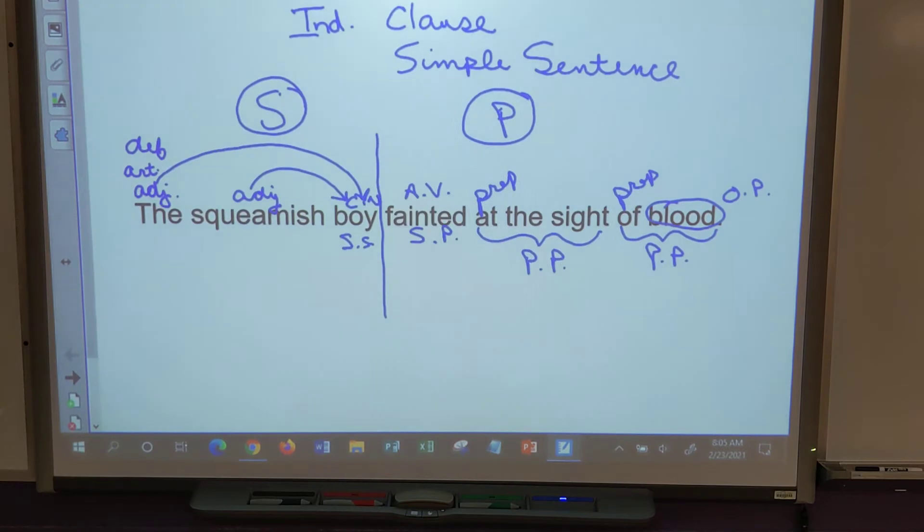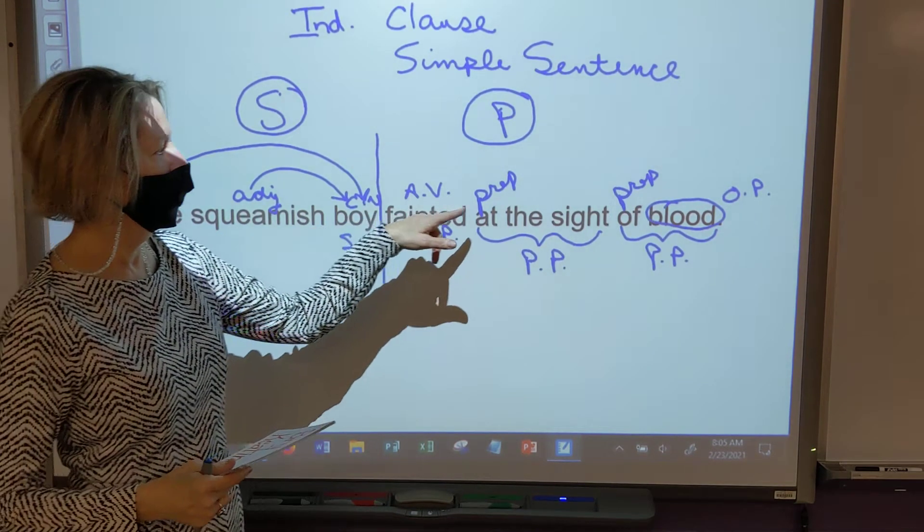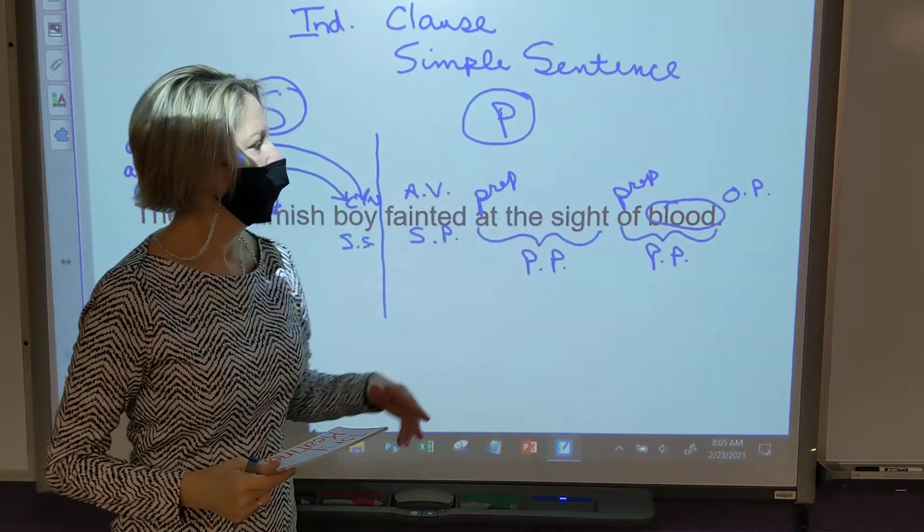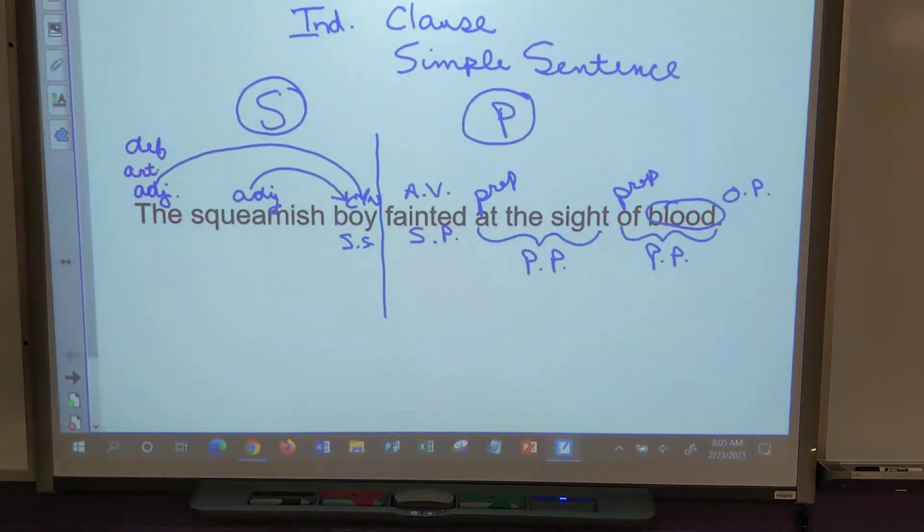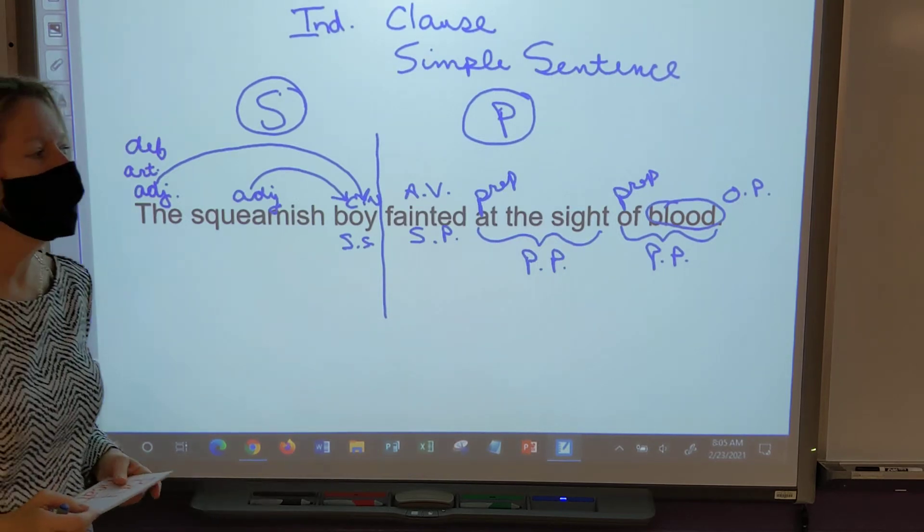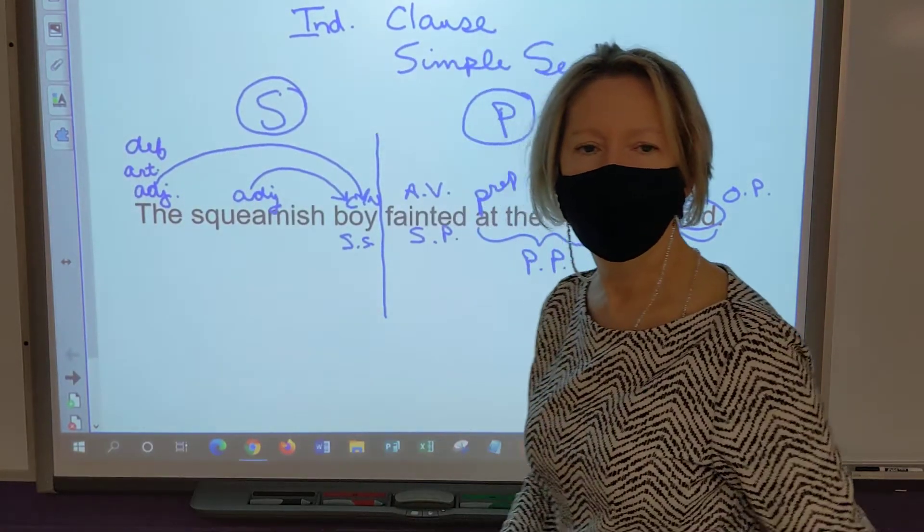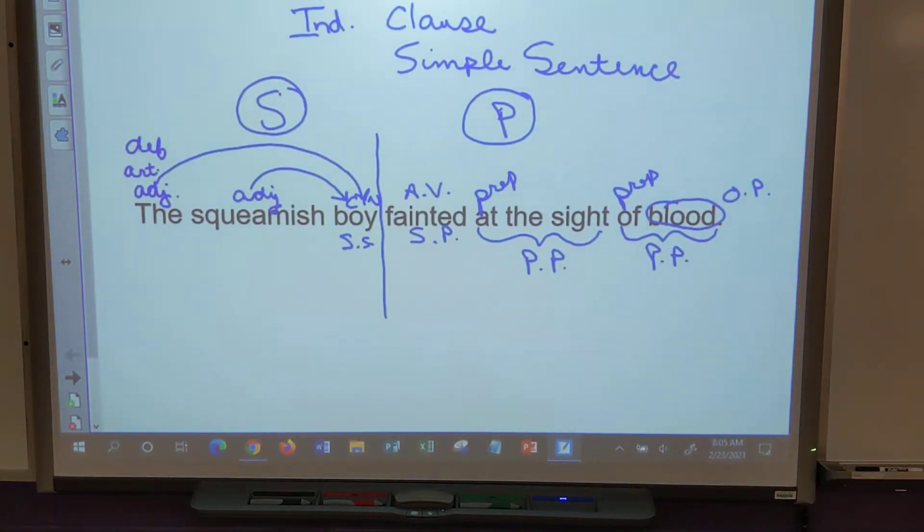And we're back to you, Brie. We've got a lot of words that aren't labeled though. The, sight, blood, they're not labeled yet. Can't think of anything? What part of speech is blood? It's a thing.